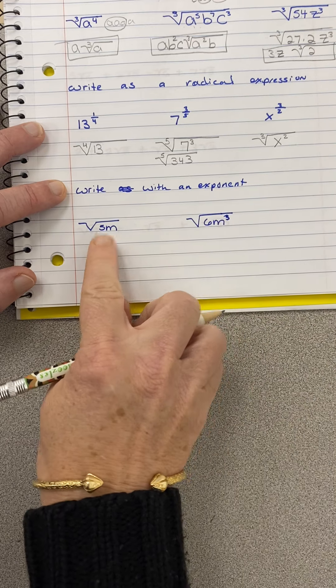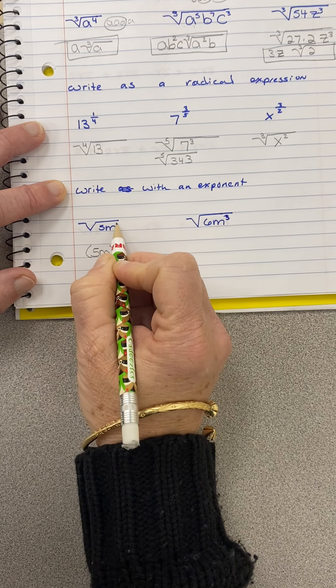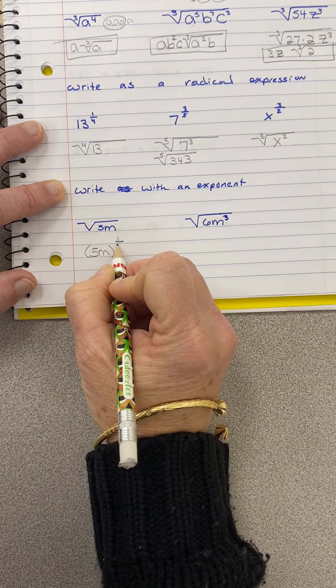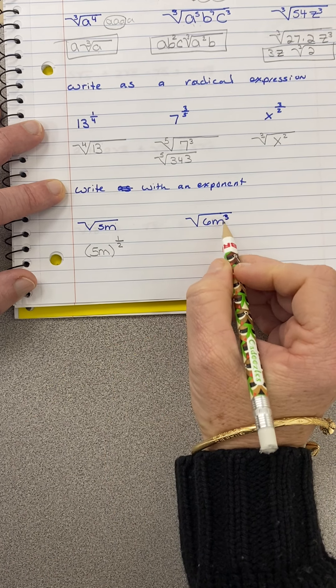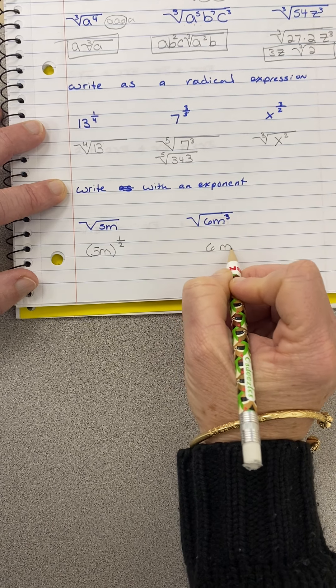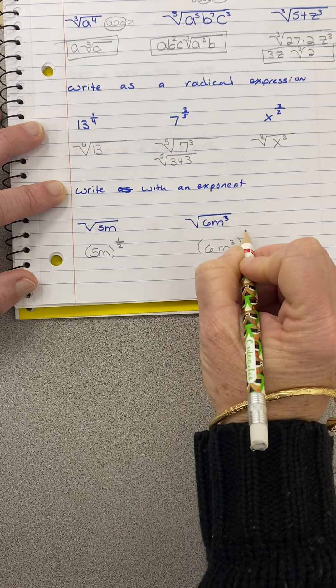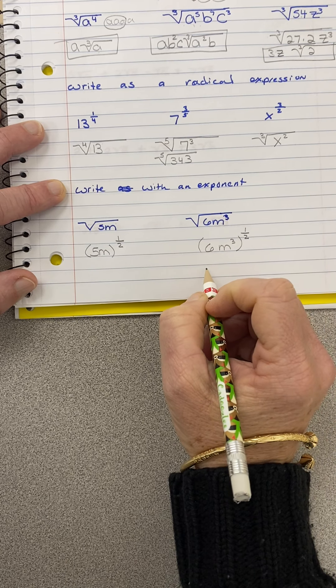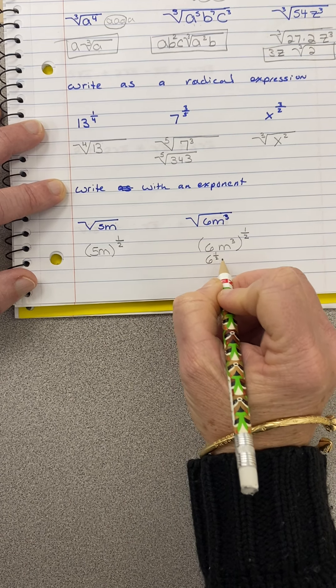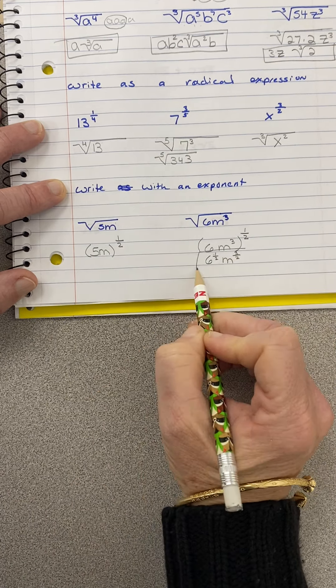So write using an exponent. Now we're going to go backwards. So we're going to put 5m. That's all being raised. The exponent here is a 1, so that's my numerator. And then the number that's here, if you don't see a number it's a 2, to the 1 half power. Now this is a little different because the only thing that's being cubed here is the m. So we're going to say 6m cubed, and then I'm going to raise this to the 1 half power. So I have 6 to the 1 half power and m to the 3 half power.